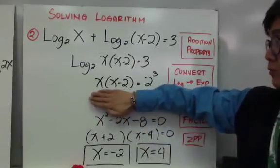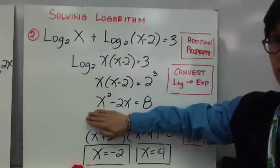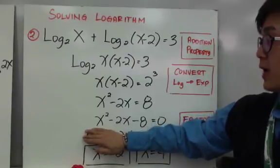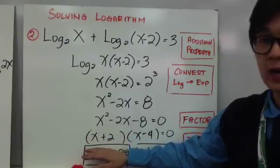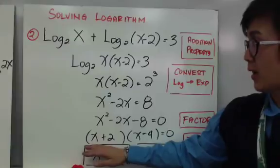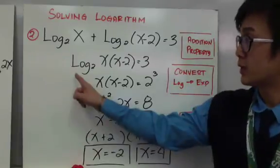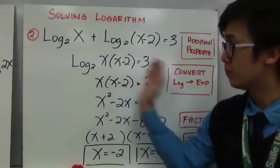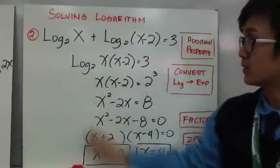Simplifying 2 cubed gives 8, and distributing x gives x squared minus 2x equals 8. Equating to zero gives x squared minus 2x minus 8 equals 0, which is factorable as x plus 2 times x minus 4. Using the zero product property, x equals negative 2 and x equals 4. Sometimes you will only end up with one logarithm on one side of the equation, and this is an example of that problem.